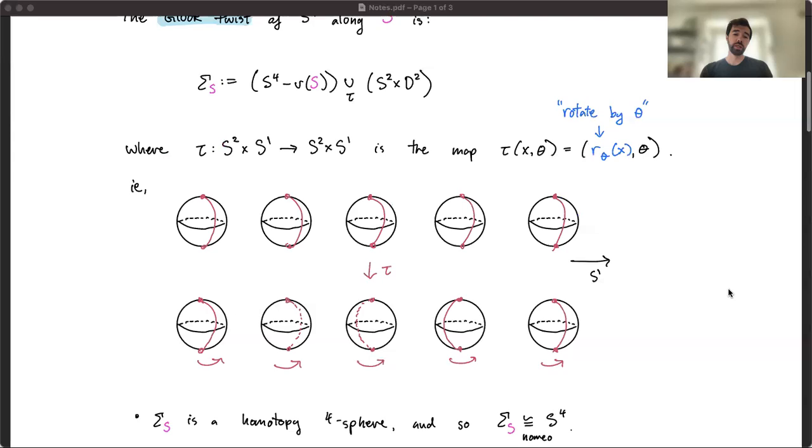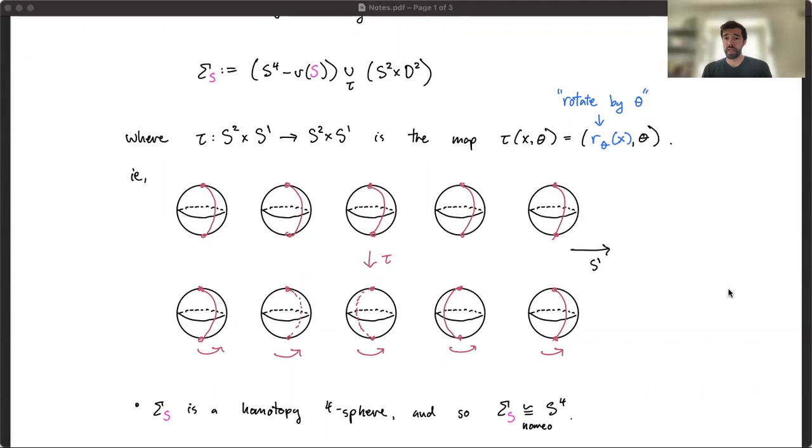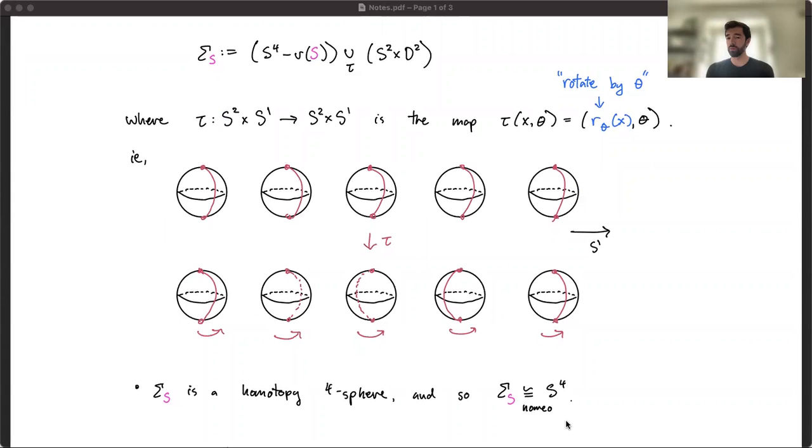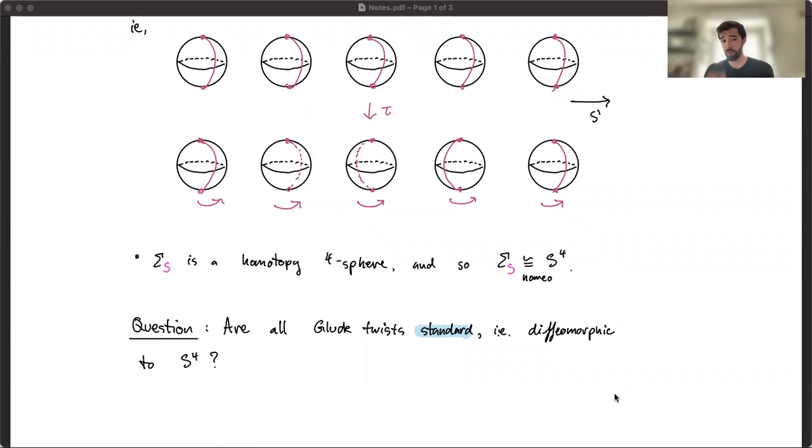The first thing you might ask is, is this still the 4-sphere? You can check that it's a homotopy 4-sphere, at least. And so by Freedman's theorem, the resulting 4-manifold is always homeomorphic to the 4-sphere. However, it's still an open question whether or not all Gluck Twists are standard. In other words, diffeomorphic to the standard 4-sphere. This is also related to the open question of whether there exists an exotic 4-sphere at all.